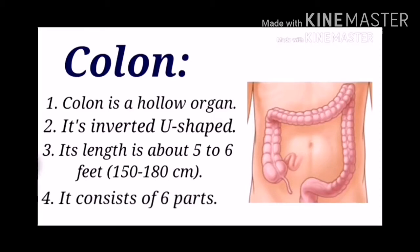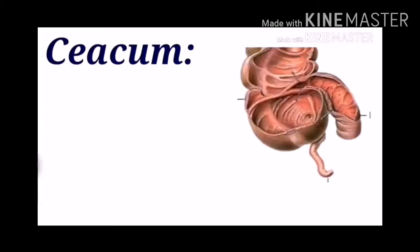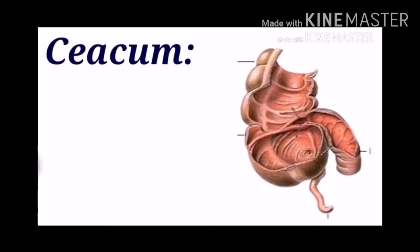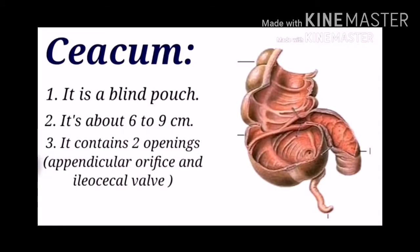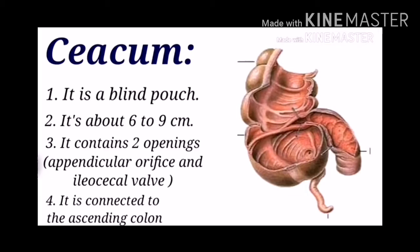It consists of many parts. The first part of the colon is the cecum, which is a blind pouch about six to nine centimeters and contains two openings: one opening of the appendicular orifice and one opening of the ileocecal valve. It connects with the ascending colon.